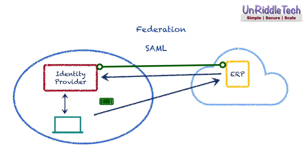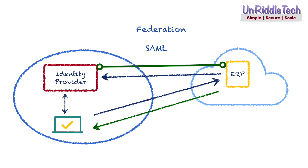The user sends the SAML assertion to the ERP application. The application trusts the SAML assertion since it is provided by an identity provider it trusts. The user is now successfully authenticated and the application can provide write access based on the user's authorization. This sounds similar to the token-based flow discussed earlier — and indeed, SAML is a standard that may be used to configure single sign-on for both internal applications and third-party applications hosted on the internet. A SAML assertion is a form of a token or claim.